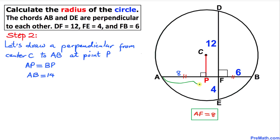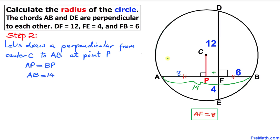We know the total length of AB is 8 plus 6, which gives us AB equals 14. Since AP is half of AB, we divide 14 by 2, and therefore the length of AP turns out to be 7.